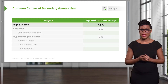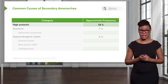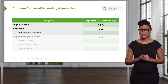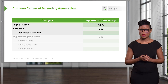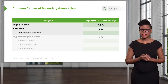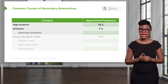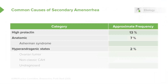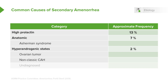A high prolactin can also cause secondary amenorrhea. There are also anatomic causes, as seen in Asherman syndrome — typically occurring after pregnancy where dilation and curettage has been performed, either due to postpartum hemorrhage or post-abortal. These adhesions cause the uterine walls to adhere to each other and obstruct menstrual flow. Secondary amenorrhea can also be found in hyperandrogenic states, such as with an ovarian tumor, non-classical congenital adrenal hyperplasia, or undiagnosed hyperandrogenism.